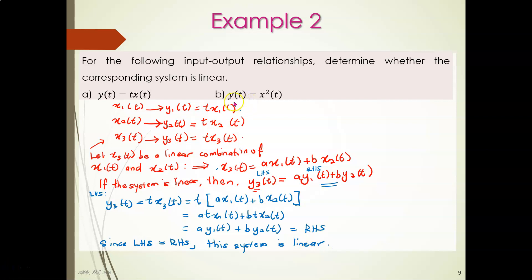Try equation (b): y(t) = x²(t), and we will discuss this in the next lecture. That's all for part four — types of systems. See you in the next lesson.